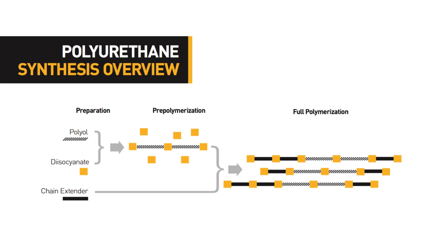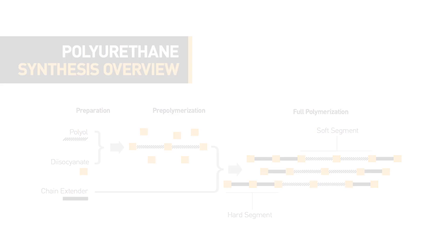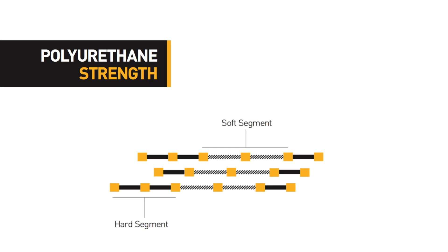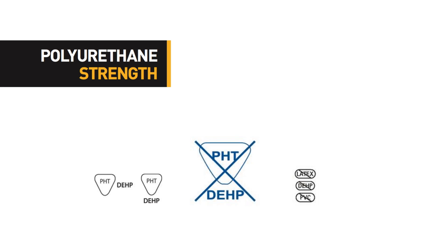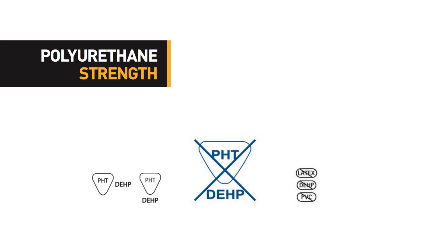Polyurethanes are also called segmented polymers, because the reaction forms two separate domains: the soft segment, from the pre-polymerization of the polyols, and the hard segment, from the chain extension reaction. These two domains are responsible for the broad physical characteristics of polyurethanes. The hard segment provides many of the high-strength properties to the polymer, while the soft segment gives the urethane pliability and allows it to retain flexibility without plasticizers.